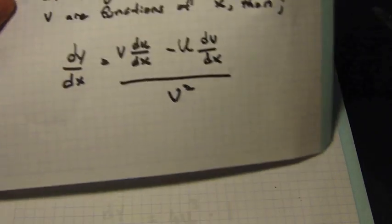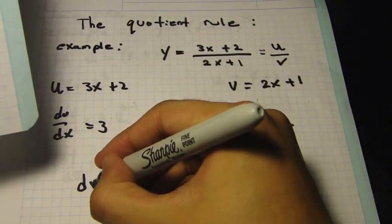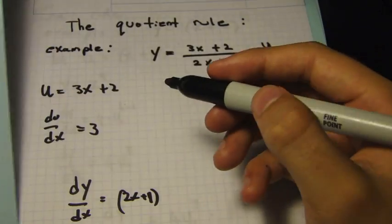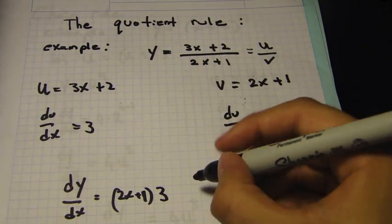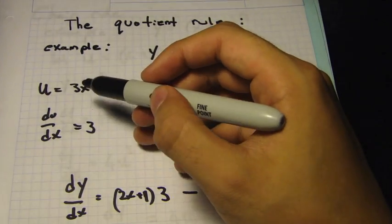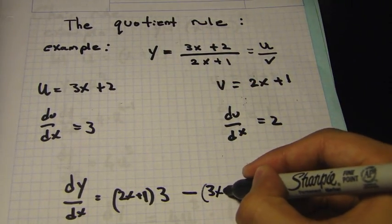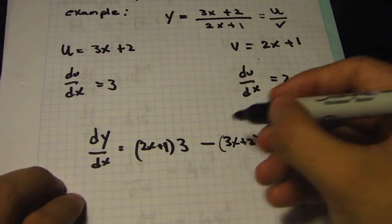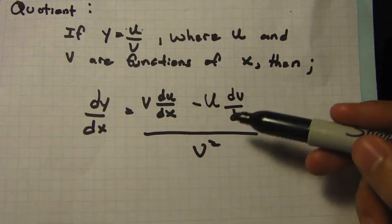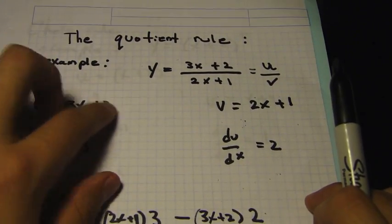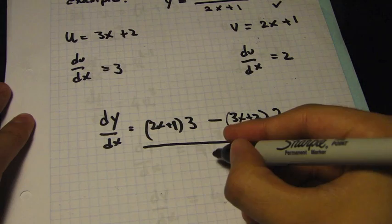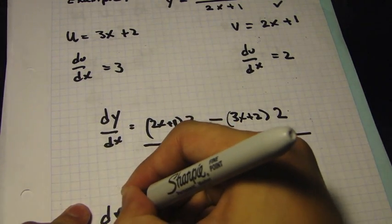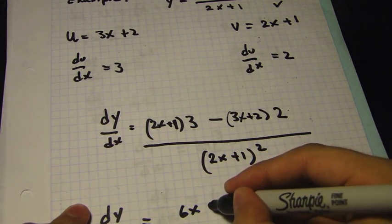Now we plug everything into the quotient rule formula. v times du/dx gives us (2x + 1) times 3. Then minus u times dv/dx gives us minus (3x + 2) times 2. All of this is divided by v squared, which is (2x + 1) squared. Expanding the brackets gives us 6x + 3 minus 6x + 4, over (2x + 1) squared.